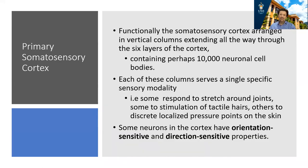The primary somatosensory cortex has six layers, which creates vertical columns, each containing about 10,000 neurons. Each column is doing a different thing — detecting a sense of sensation — but some are oriented to direction, some to angle, and some to pressure. The brain takes all of that information, processes it, and joins it together to make sense of it.